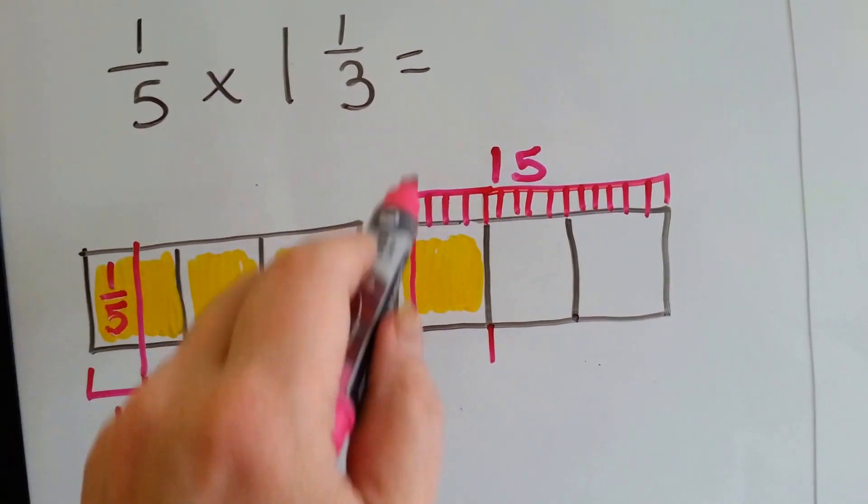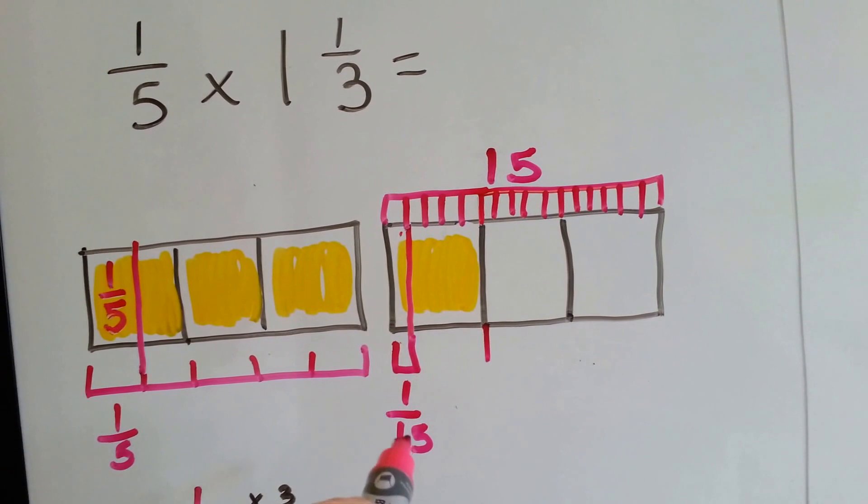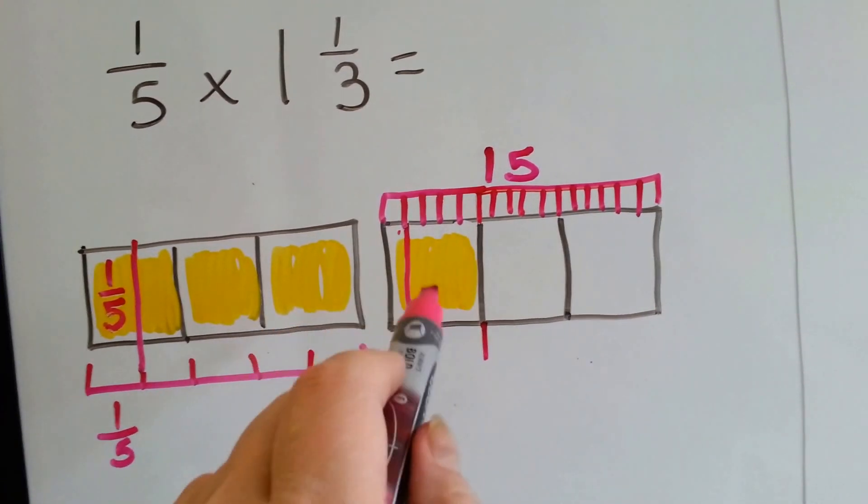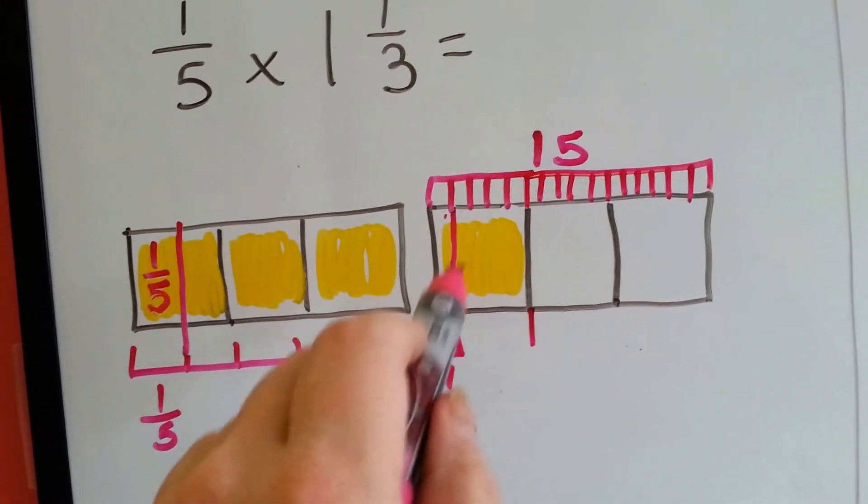So 1 of these, 1 fifth of this yellow box is going to be a 15th. That's how I turned this box that was 1 third of this big box into 1 fifth of this little yellow box.